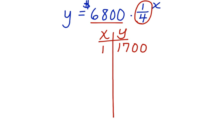If it continues at this rate, what would happen on day two? Well, on day two, she would have $6,800, the initial amount, times one-fourth to the second power, or one-fourth squared.